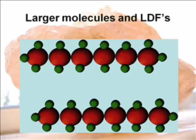Let's say I have two largish molecules — one, two, three, four, five, six. These are molecules of hexane. So you have two molecules of hexane. Hexane is a liquid at room temperature, and it actually has a relatively high boiling point.